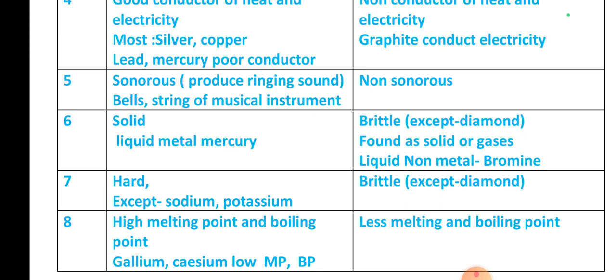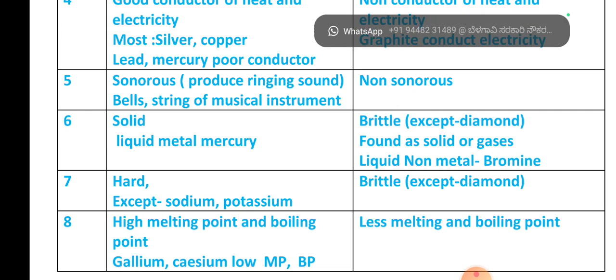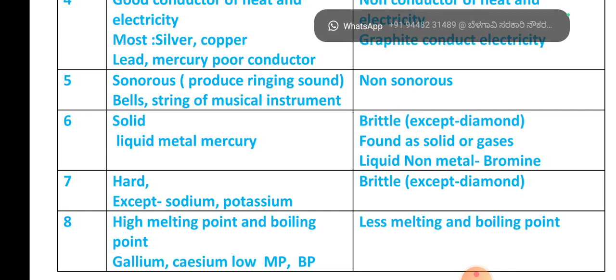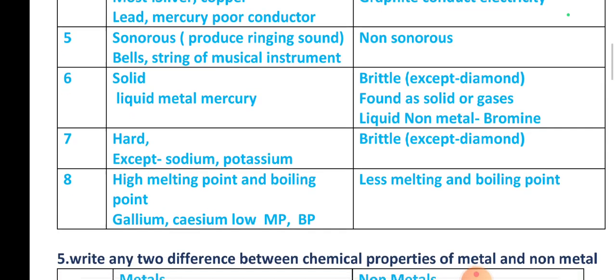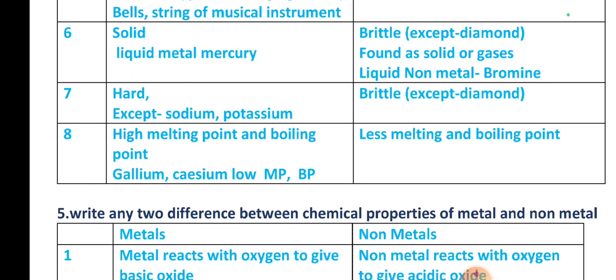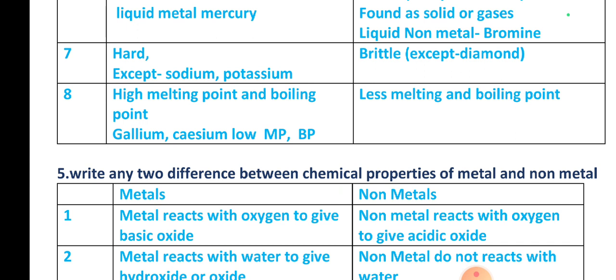Metals are solid except mercury, which is liquid — mercury is the exception. Non-metals are brittle except diamond, and can be found in all three forms: solid, liquid, or gas. Metals are hard except sodium and potassium, which can be cut with a knife. Non-metals are brittle except diamond.